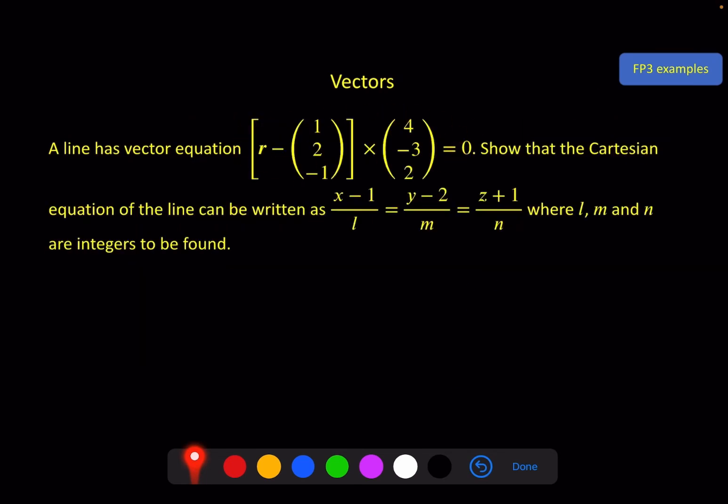Here we have a line with vector equation given. And we're asked to show that the Cartesian equation can be written as (x-1)/l = (y-2)/m = (z+1)/n where we have to find l, m and n. Now given what we know about the vector form in this way, we know that this must be a, this must be b. And l, m, and n are just the elements of b. So l must be 4, m must be -3, and n must be 2. But this little phrase 'show that' implies that I shouldn't just write it down. I should give some idea of where this has come from. So I'm going to have to go through a little bit of a process here. So what I can do is very similar to what we've already talked about. If the cross product of these two things equals zero, then I can immediately write that this must equal some multiple of this.